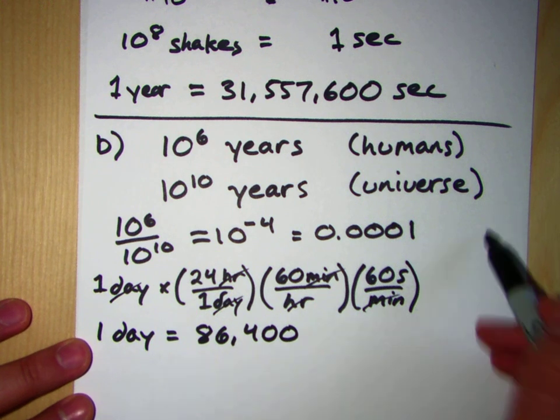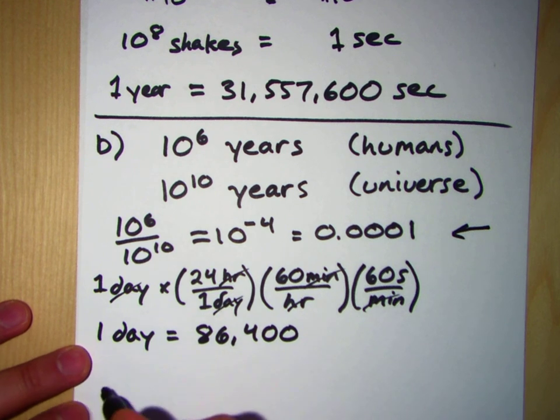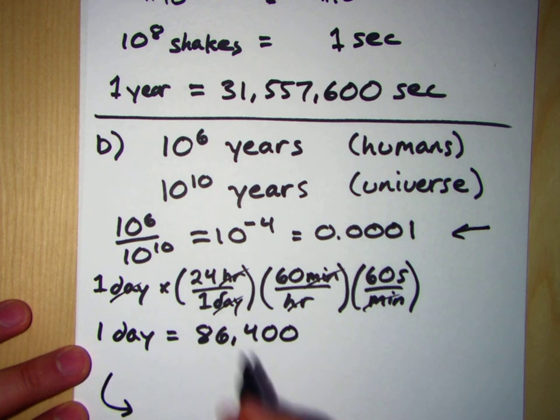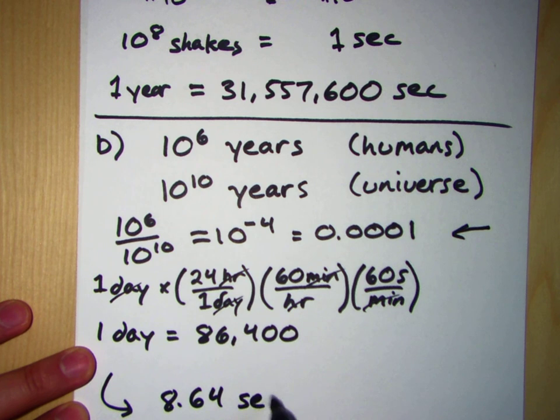Well, one 10,000th of that is just going to be dividing this number by 10,000. So the amount of time, if the universe were shrunk down to a day, that means then that humans have been around for one 10,000th of this number, which is 8.64 seconds.